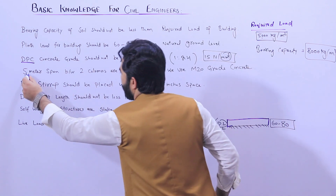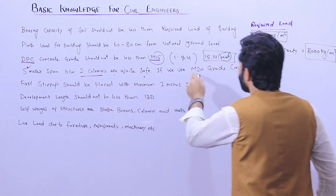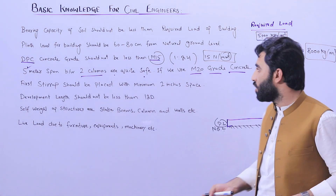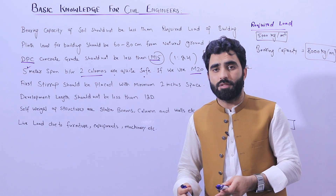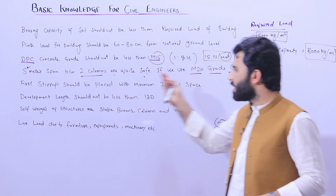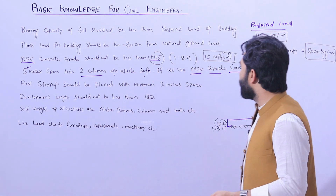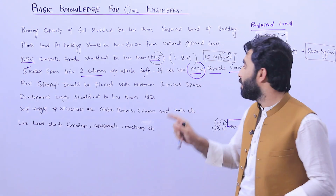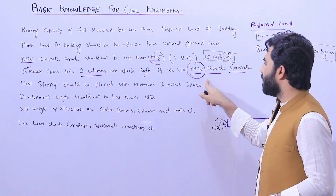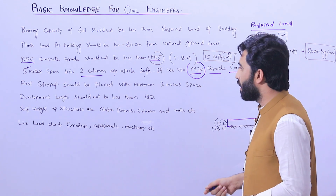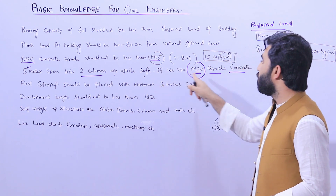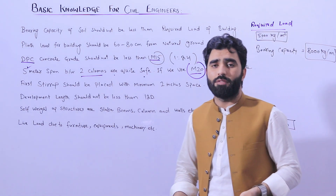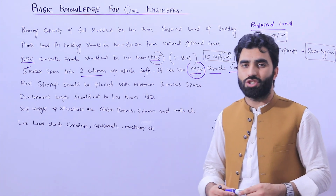For a 5-meter span between two columns, it is quite safe to use M20 grade concrete. According to the structure load and bearing capacity of soil, you will design the footing, size of column, and inside steel reinforcement. If you have six or more steel rods, the grade of concrete should not be less than M20. Five meters span between two columns is quite safe with M20 grade concrete. The inside steel reinforcement depends on the structure load.